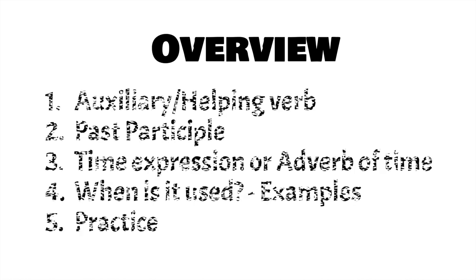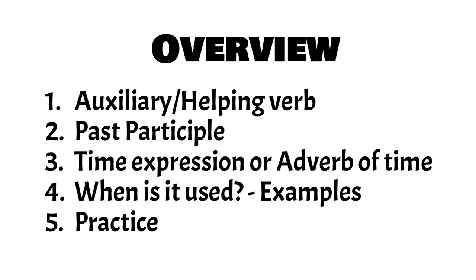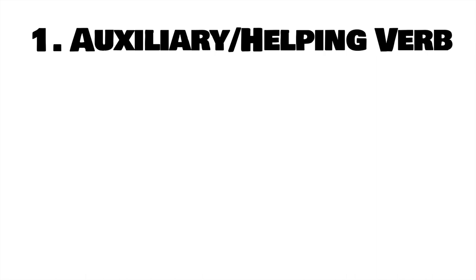So, in this lesson, we're going to take a look at first, the auxiliary or helping verb that we use with the present perfect. The past participle. Then we're going to look at the time expressions or adverbs of time that we use with the present perfect. Then we're going to look at when it is used. And we're going to look at some examples. And then we're going to have an exercise at the end. So, first stop: auxiliary, helping verb.